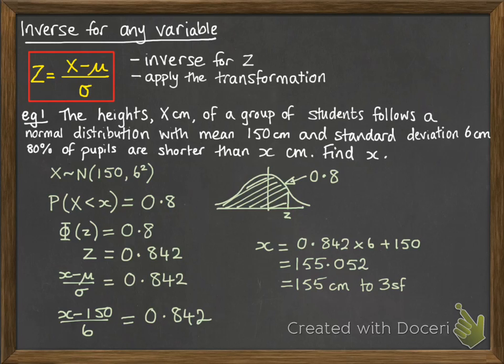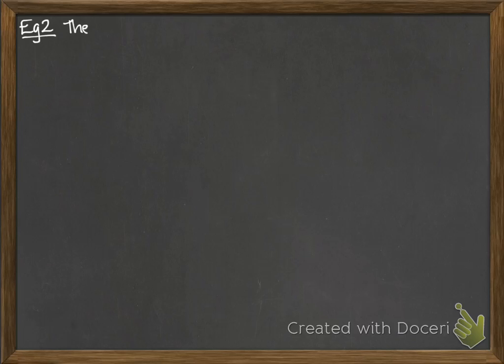So we found what the z value would be, and then worked backwards through that transformation formula that's at the top left there to be able to work out x. Let's have another look at an example.